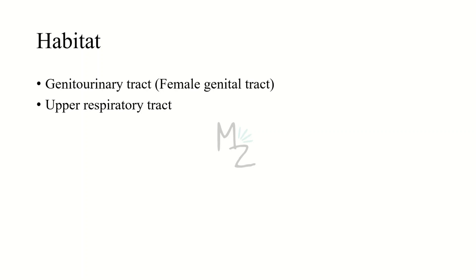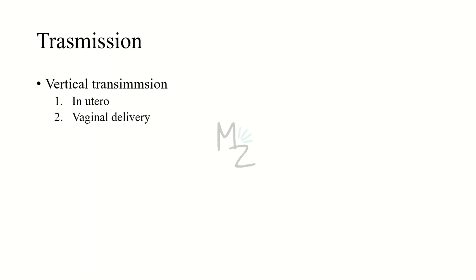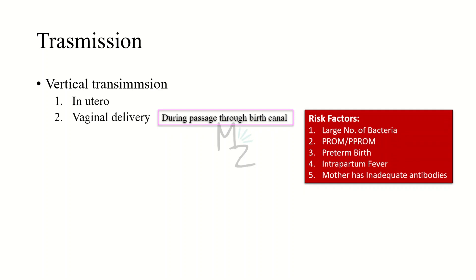Habitat: generally this bacterium is found in the genitourinary tract or upper respiratory tract, but more specifically it is found in the female genital tract. Transmission is vertical — either in utero when the baby is in the uterus and the infected mother transfers the infection to the baby, or during delivery. Risk factors include a large number of bacteria, prolonged rupture of membranes, preterm birth, intrapartum fever, or the mother having inadequate antibodies.